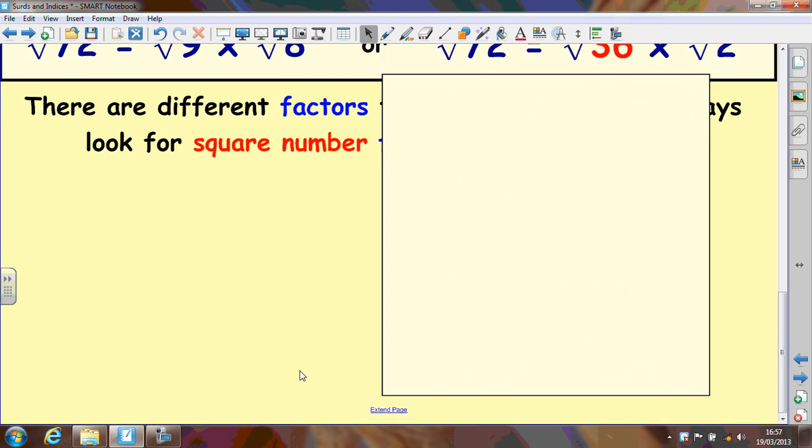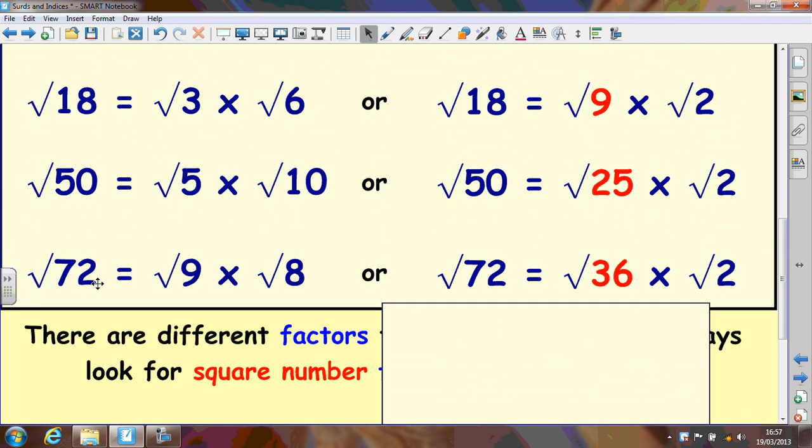And finally you can write down root 72 as root 9 times root 8. Which is good because root 9 is a square number but we always look when simplifying surds down for the biggest square number that goes into 72 and that's 36.